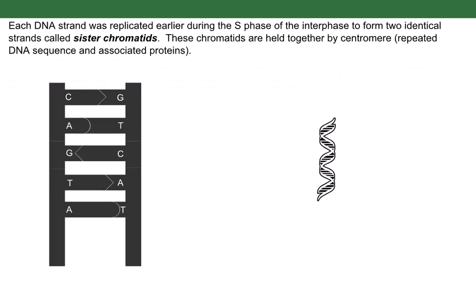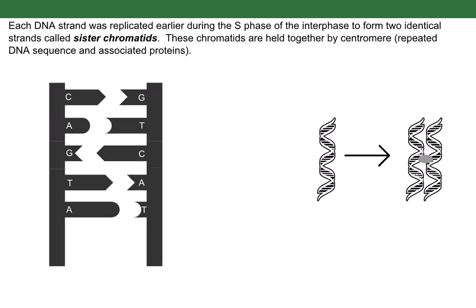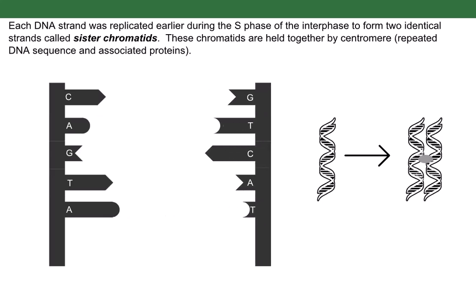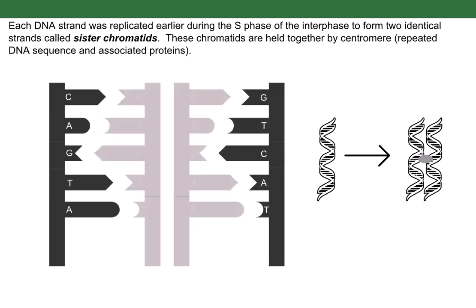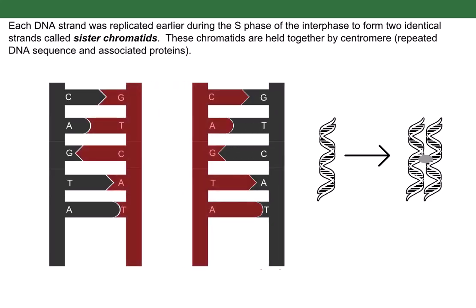Each DNA strand was replicated earlier during the S phase of interphase to form two identical strands called sister chromatids. These chromatids are held together by the centromere.